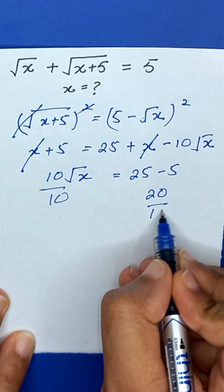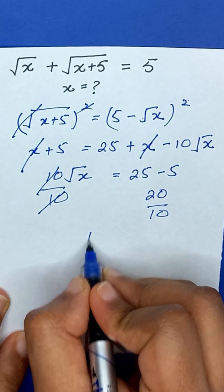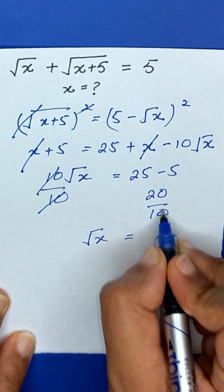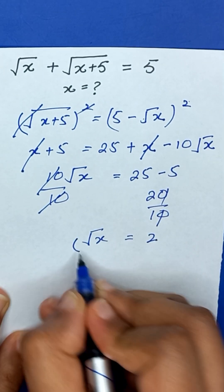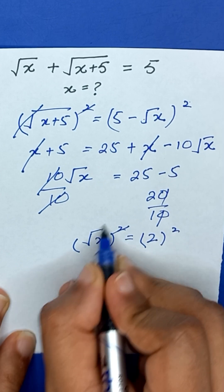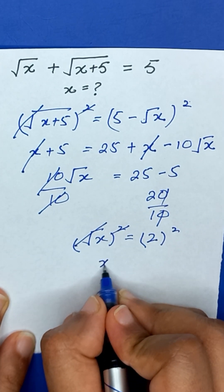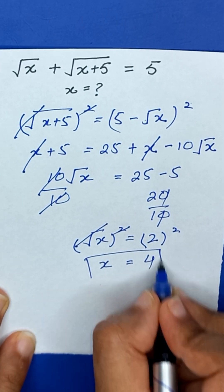Now dividing 10 on both sides, this 10 and 10 will be cancelled out and square root of x will be equal to 2. To find the value of x, we will apply square on both sides. This square and square root will be cancelled out and the value of x is equal to 4.